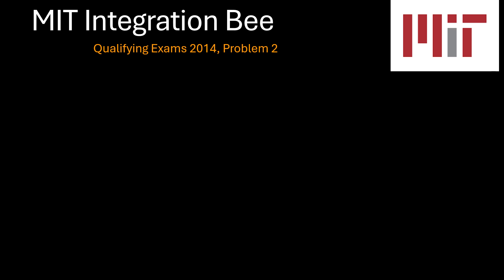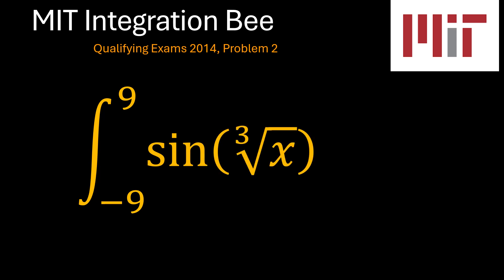This is problem 2 of the MIT integration B, 5.14, which is the definite integral from x equals negative 9 to x equals positive 9 of the sine of the cube root of x. So it's an interesting problem. Let's see how we may be able to solve it.